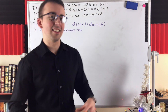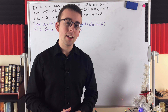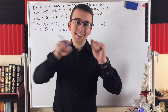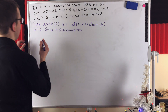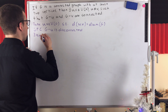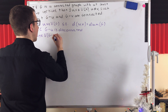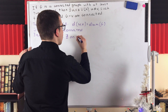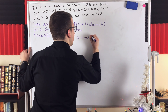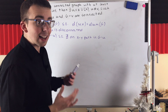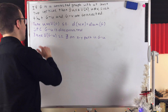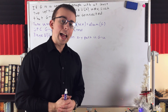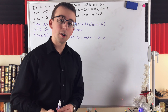Since G minus U is disconnected, by definition it must contain at least one pair of vertices X and Y that are not connected by a path. There exist two vertices X and Y in the vertex set of G minus U such that there does not exist an XY path in G minus U. So if we can show that there is in fact an XY path in G minus U, we'll have our contradiction and we'll be done.